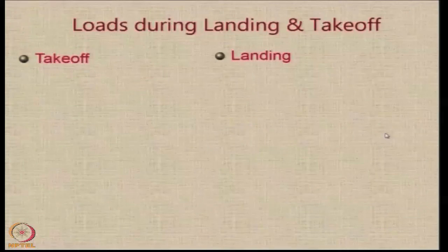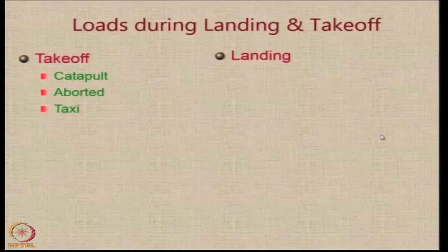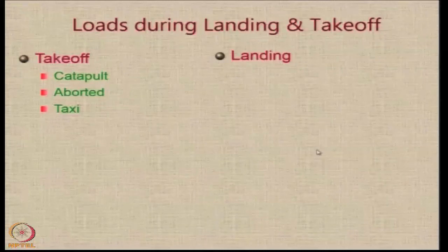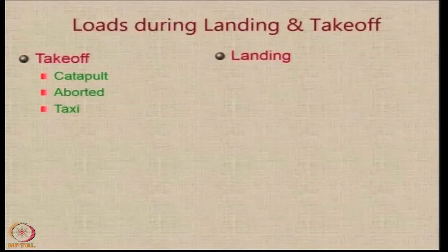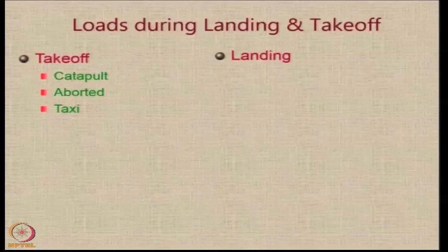Let us take the loads acting during landing and takeoff as an example. During takeoff, there could be 3 kinds of load: the catapult takeoff load, where energy is literally provided to throw the aircraft — most applicable for aircraft launched on naval air carriers using steam-powered catapults; loads during aborted takeoff, which create huge loads on the landing gear due to braking; and taxi loads, which account for bumps and turning.